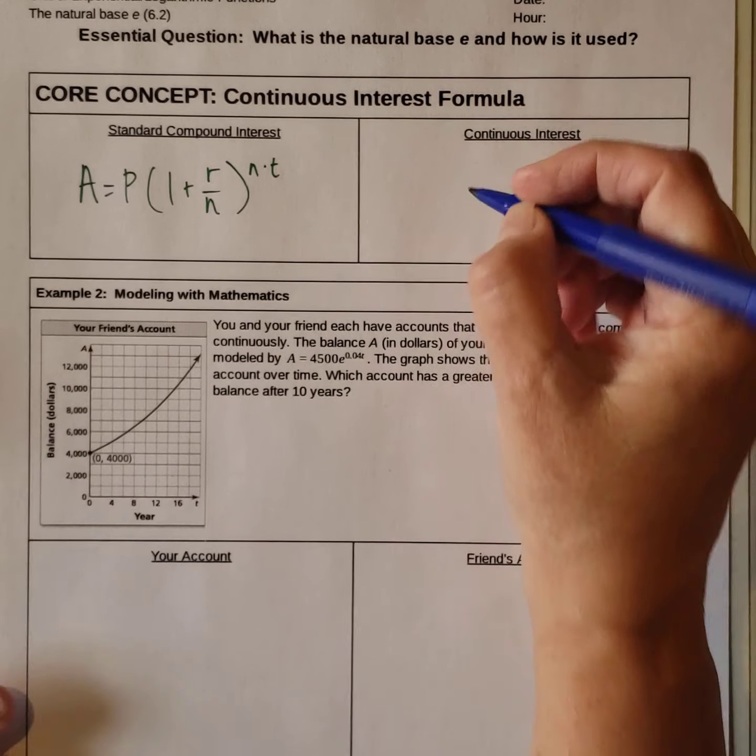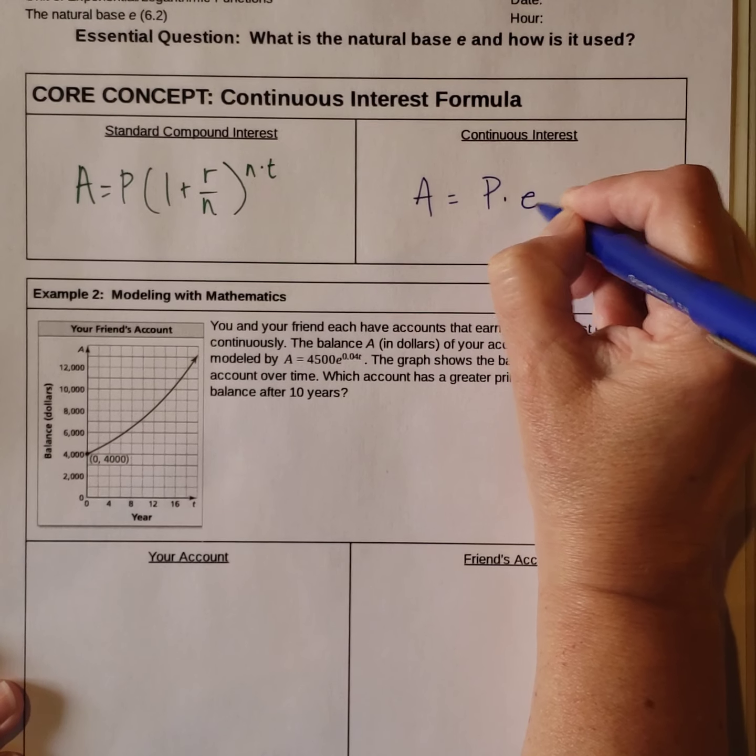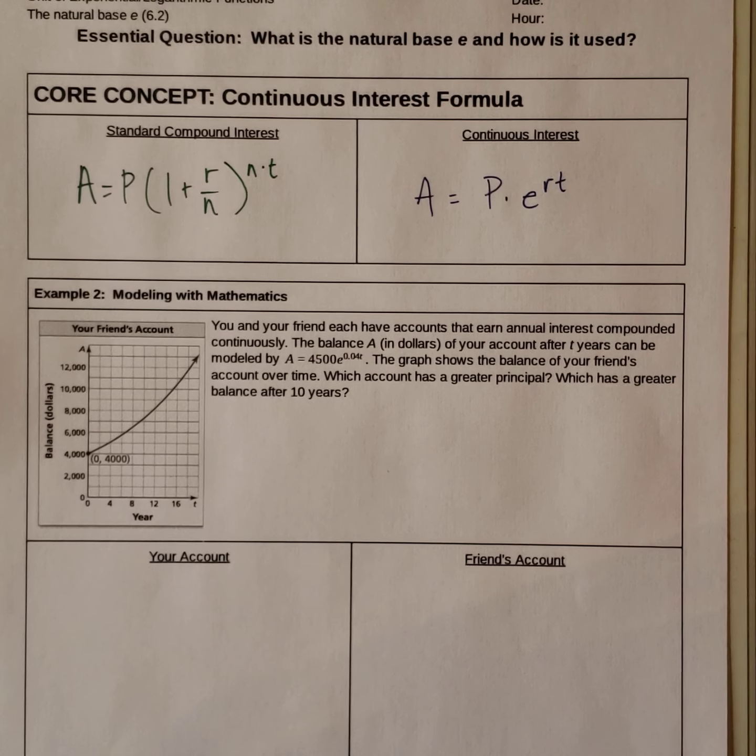The formula for that is A equals P times e raised to the rt. And some people refer to this as the PERT formula.